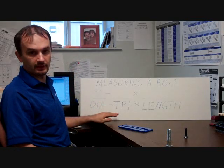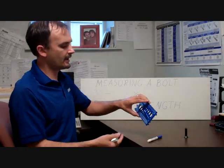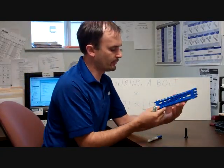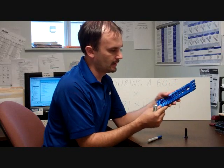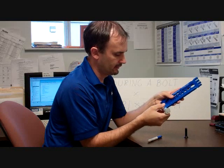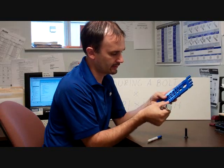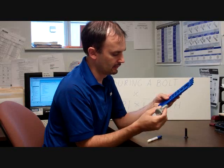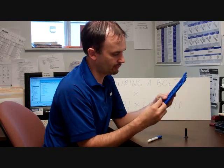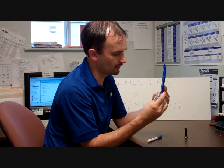The next thing that we need would be our TPIs or threads per inch. For that, we're going to flip our bolt gauge over and we're going to look at these little grooves that have been molded into the back and the grooves are molded at different spacings. So we look at this bolt, we see it has fairly coarse spacing so we're going to kind of move up the scale a little bit.